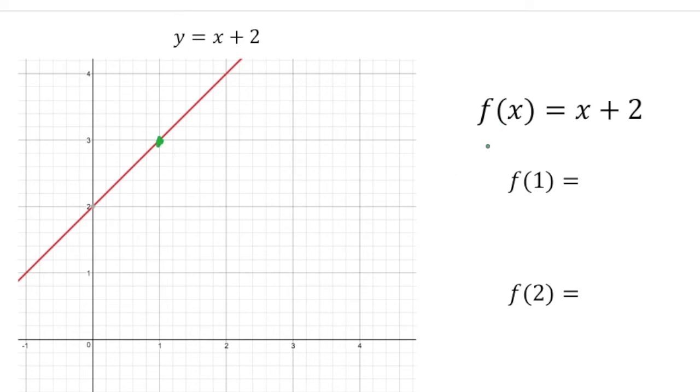But what you can do is you can plug in this value of 1 in for x. So 1 plus 2 gives you 3. So this one, the question is f of 2. What's the y value when x is 2? Well, if I plug that in, 2 plus 2 gives us 4.